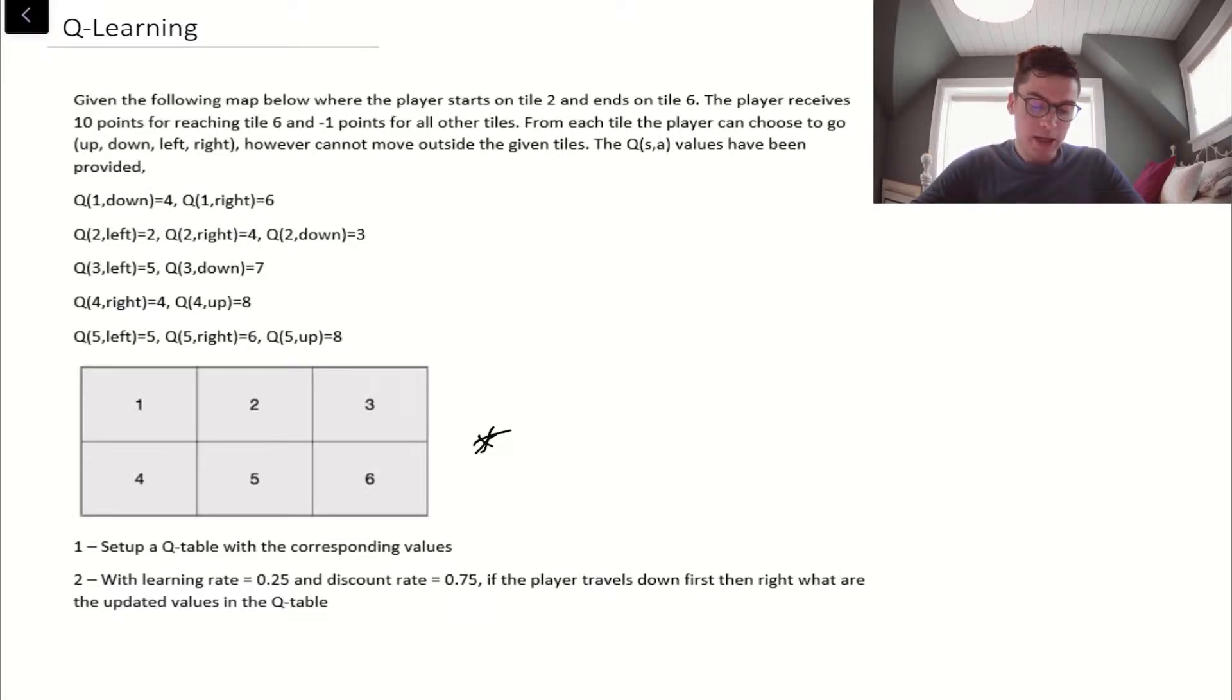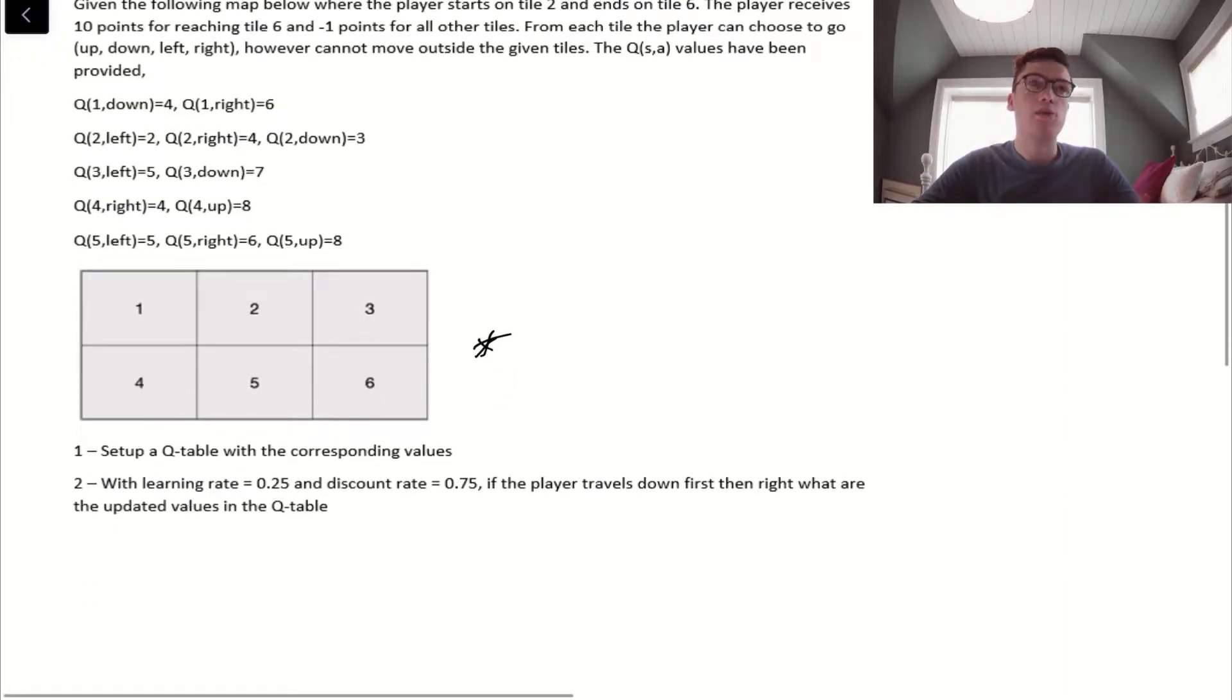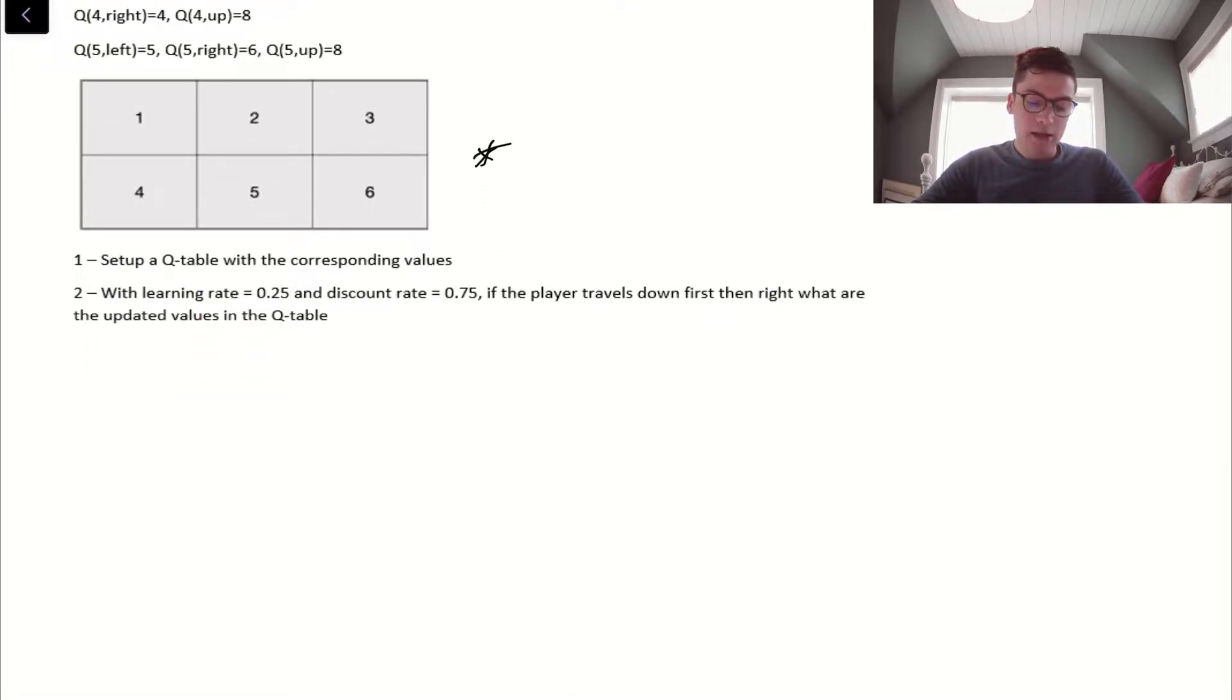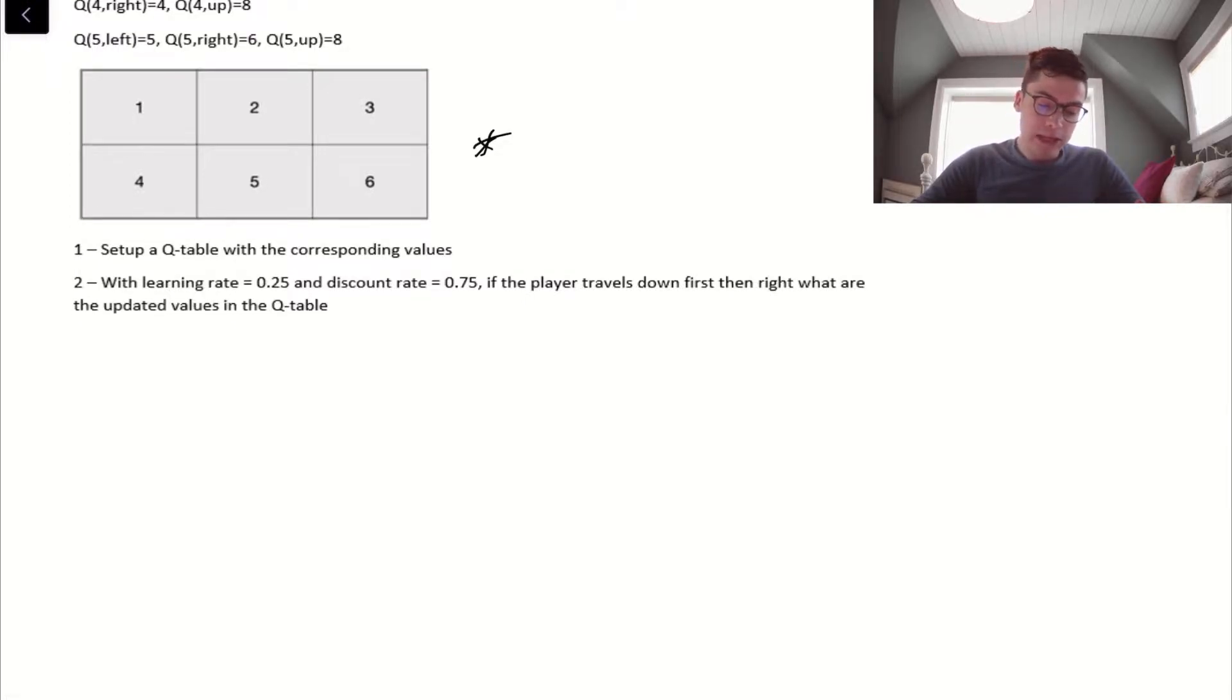The first question is asking us to set up a Q table. How we're going to do this is we're going to have two different axes for this table. We're going to have actions, and we're going to have states. The states are going to be all the states in this environment that they give us.